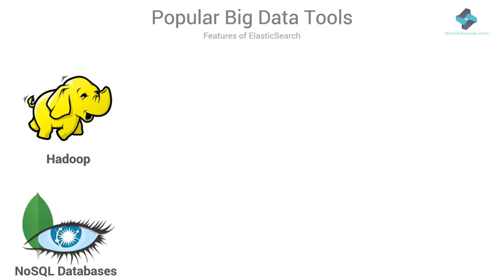Databases like MongoDB, CouchDB, and Cassandra can scale horizontally and make use of clustered compute and storage capacities of hundreds or thousands of machines joined together.